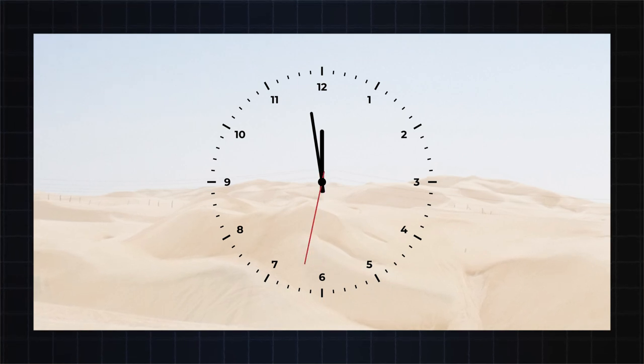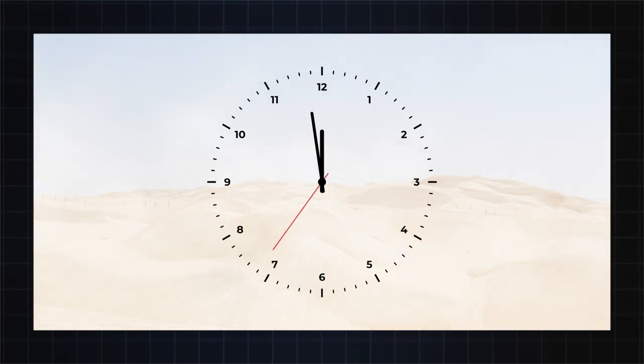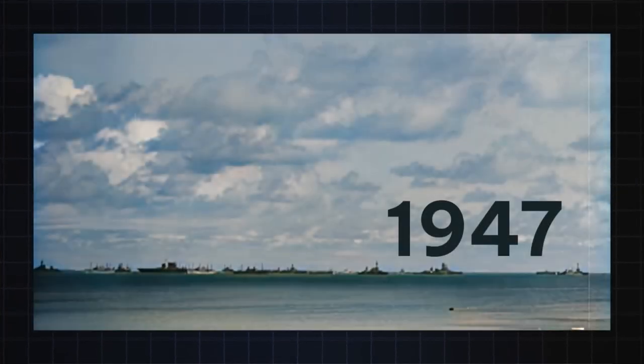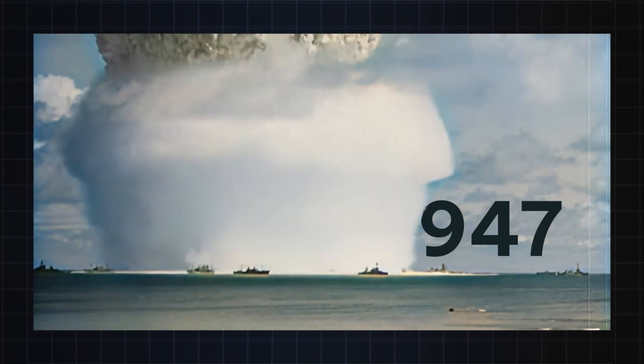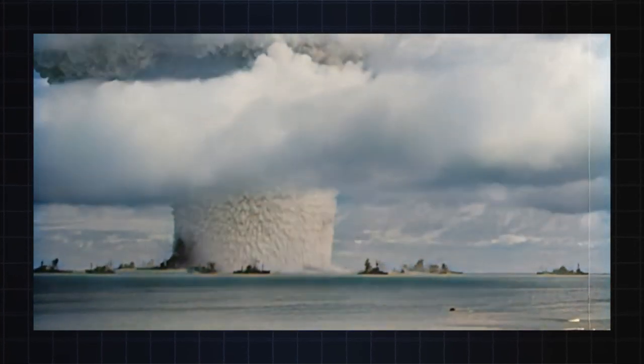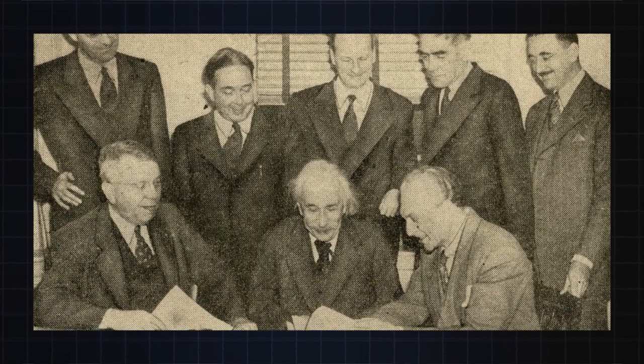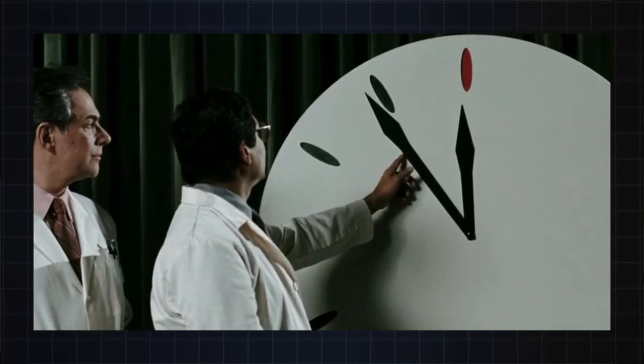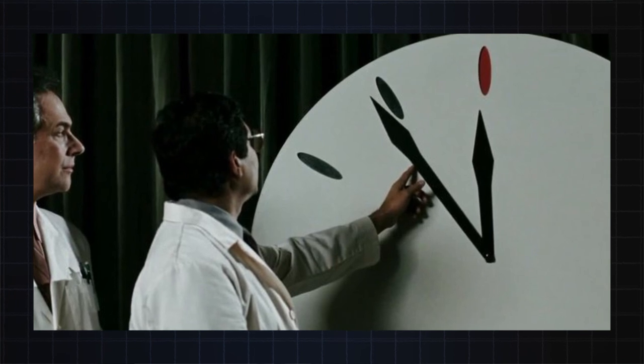And what happens when the clock strikes 12? Well, let's just say it's not good. Back in 1947, as the world reeled from global conflict and the first acts of nuclear aggression in our history, the Bulletin of the Atomic Scientists set their now infamous doomsday clock for the first time.